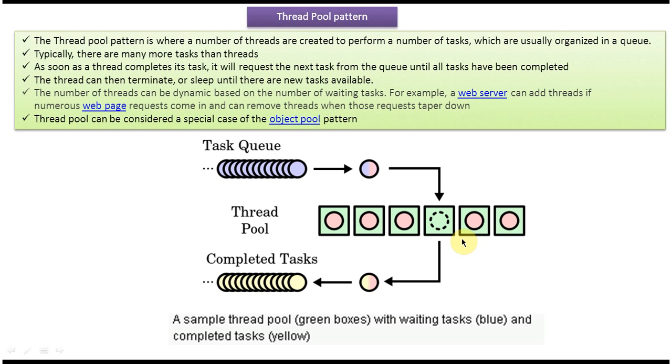Once tasks are not there in the Task Queue, the Thread will go to Sleep State or terminate. And the number of Threads can be dynamic based on the number of waiting tasks. So what does it mean?